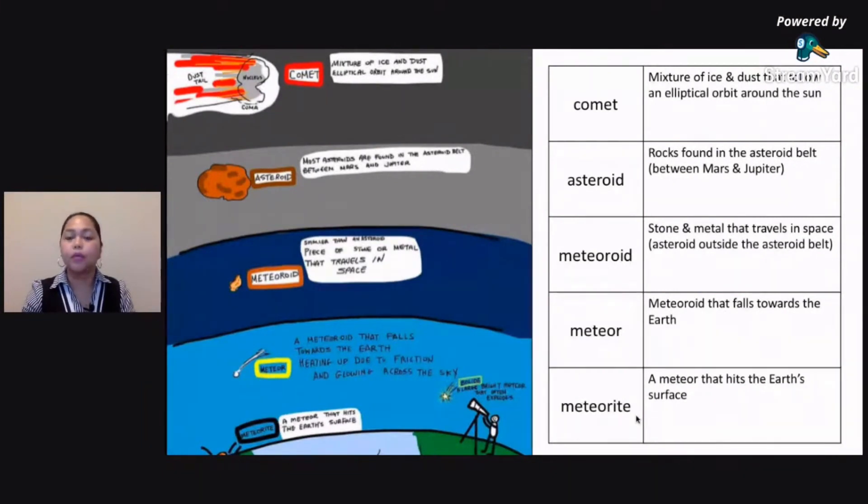Now going back to our topic, we were talking about comets, and we said comets are mixtures of ice and dust. They follow an elliptical orbit. They don't have their own light. They become lit because of the heat coming from the sun.